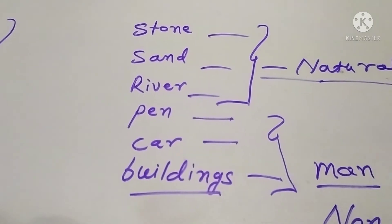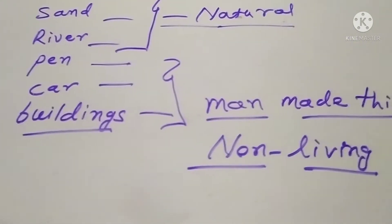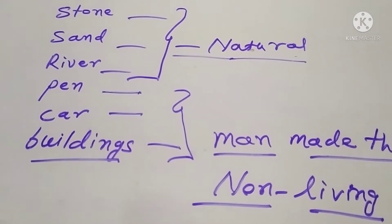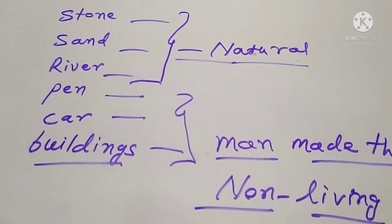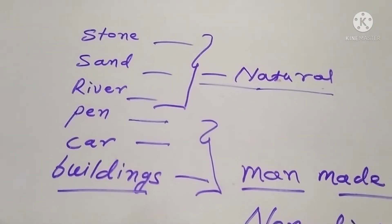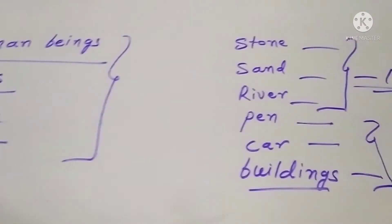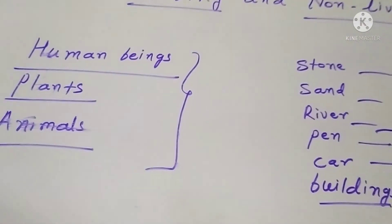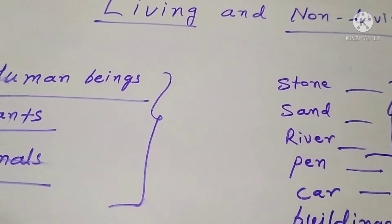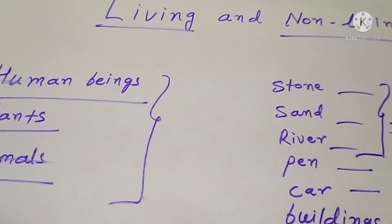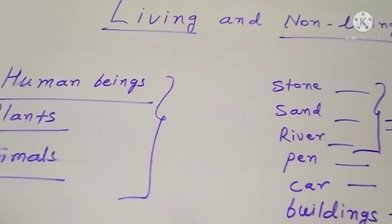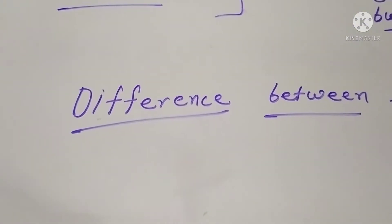Non-living things means things that have no growth and no life — they do not grow bigger or smaller. These are called non-living things. Did you understand? Living things and non-living things.